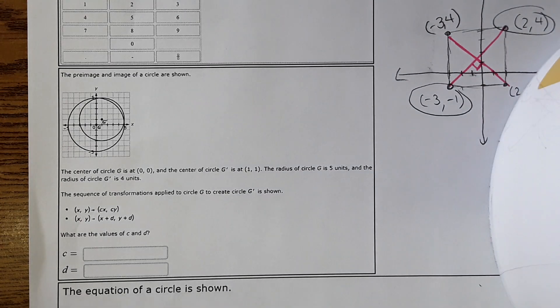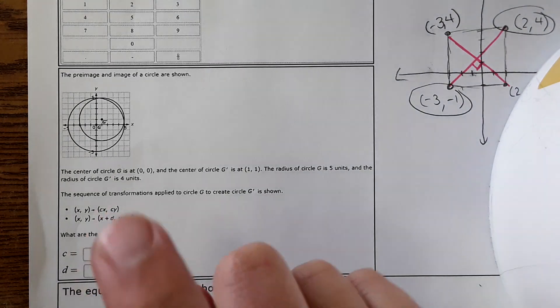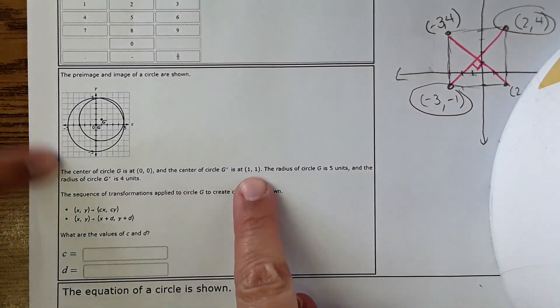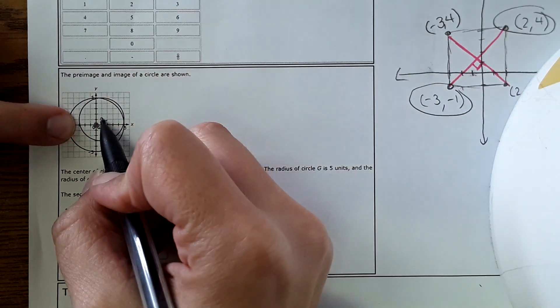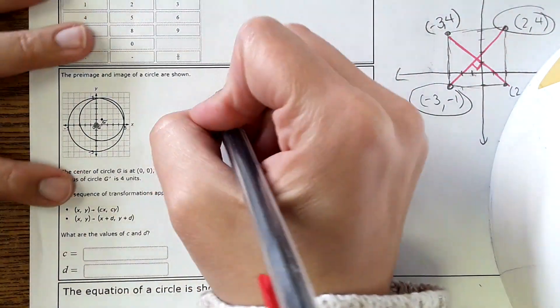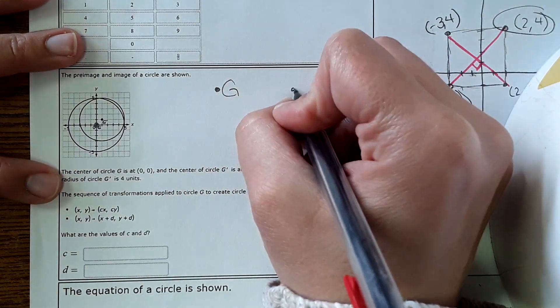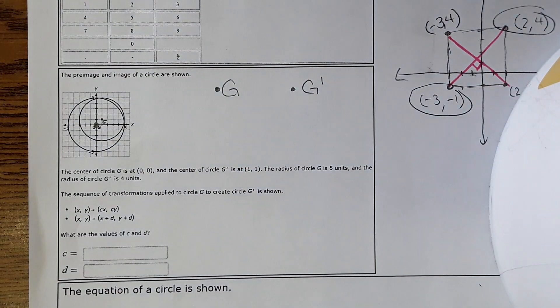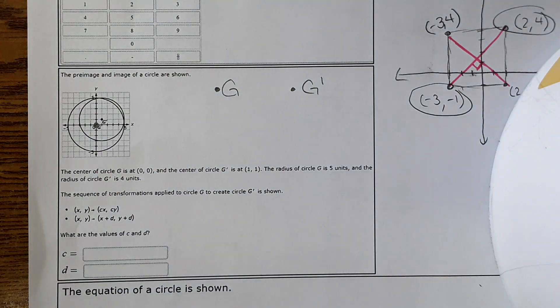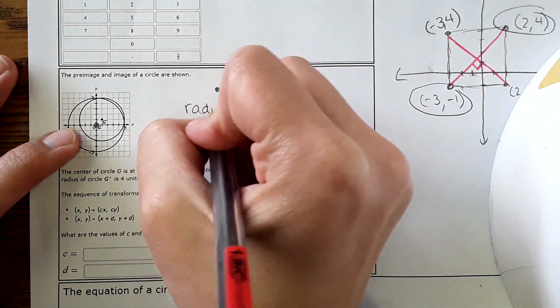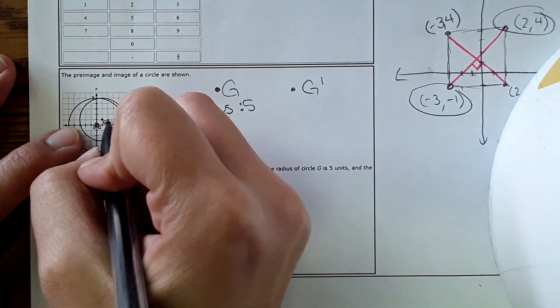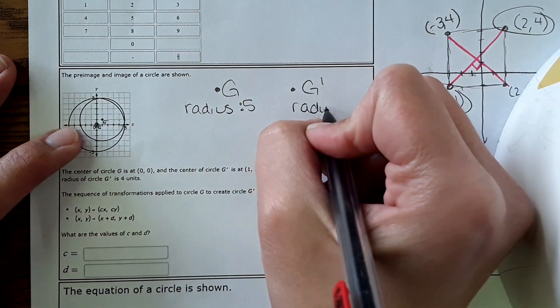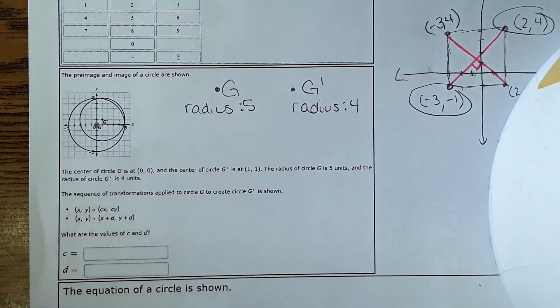Next one. It has to do with a transformation, transformation of a circle. It says the center of circle G is at 0, 0. And then G prime is at 1, 1. So looking at this, you have G at 0, 0 and it's the larger circle. And then G prime is right here. It's the smaller one. Remember, G is the original. G prime is the second one, the new one, or the image, pre-image image. It says right here that the radius of G, and you could also count this from 0 to 5, is 5. And the radius of G prime, you could count this to 1, 2, 3, is 4 units.